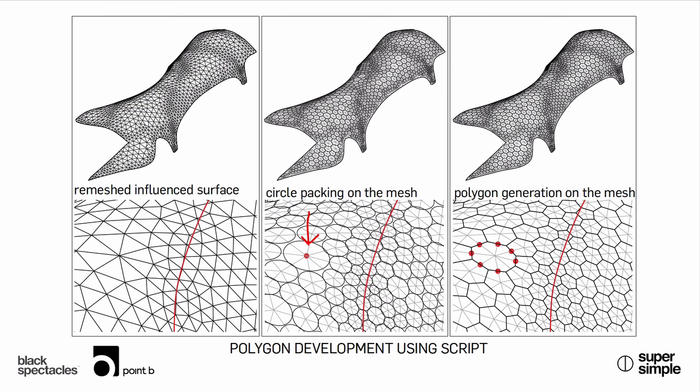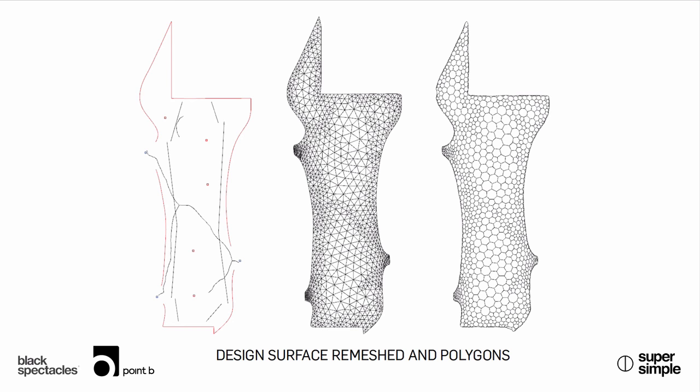You can find the Daniel Piker script online — he has his own website, and you can also go on the Grasshopper forums. In this slide you see the plan view of the shell with the lines of influence that went into the remeshing. Then you see the remeshed mesh in the middle, and the resultant polygon set for this particular version.